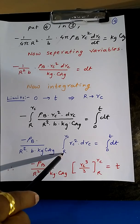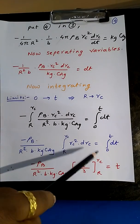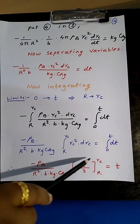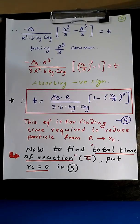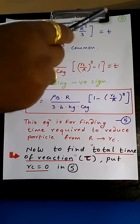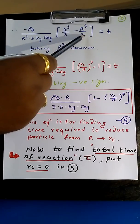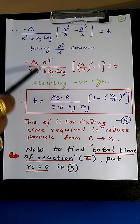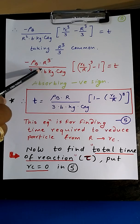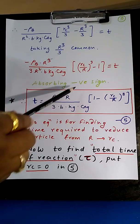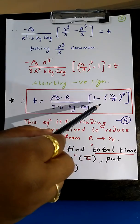Integrating both sides: minus (ρB / R² × b × Kg × CAg) × integral from R to Rc of Rc² dRc equals integral from 0 to t of dt. Taking ρB, Kg, and CAg as constants, integrating x² dx gives x³/3. Applying limits: minus ρB × R / (3 × b × Kg × CAg) × [(Rc/R)³ - 1] equals t. Absorbing the negative sign: t equals ρB × R / (3 × b × Kg × CAg) × [1 - (Rc/R)³].